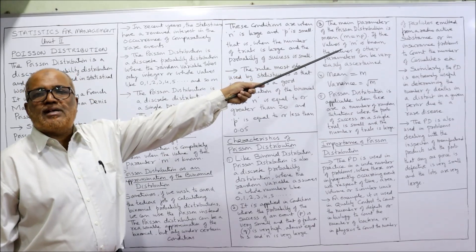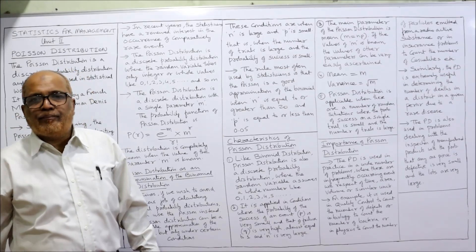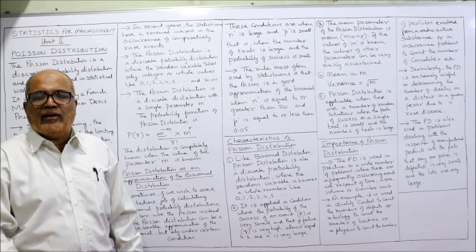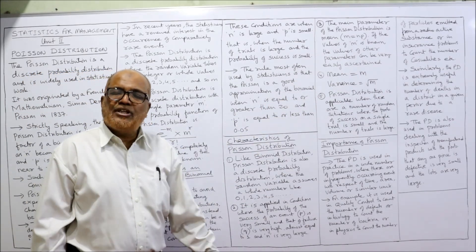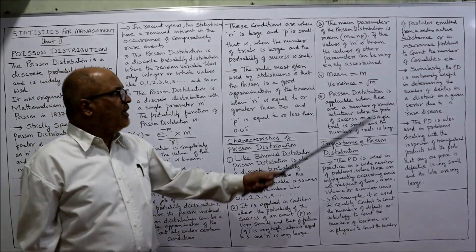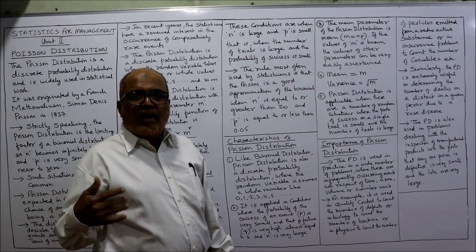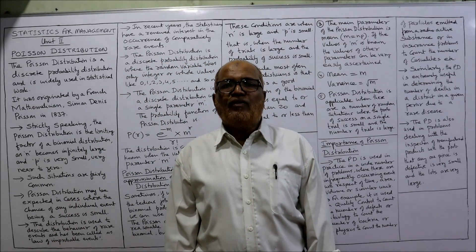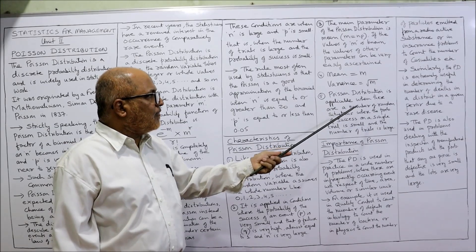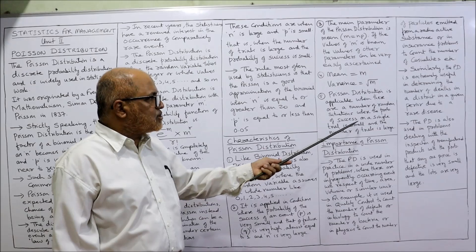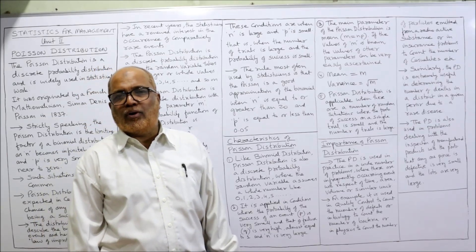Third characteristic: the main parameter of Poisson distribution is m. We calculate m = n × p. This m is the main parameter. Mean is equal to m, and variance — that is standard deviation squared — the variance is √m. Poisson distribution is applicable when there are random situations where the probability of success on a single trial is small and the number of trials is very large. These are the characteristics of Poisson distribution.